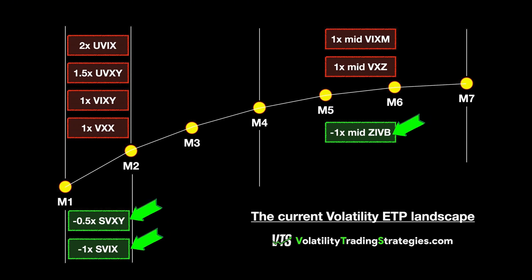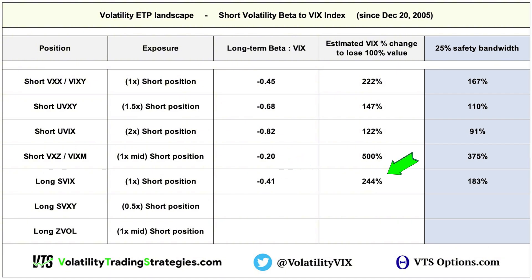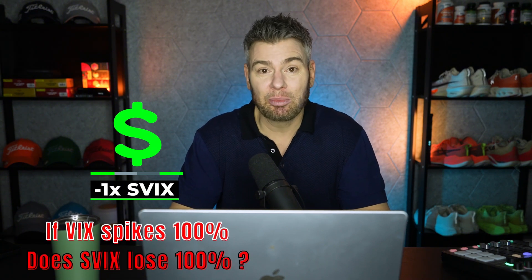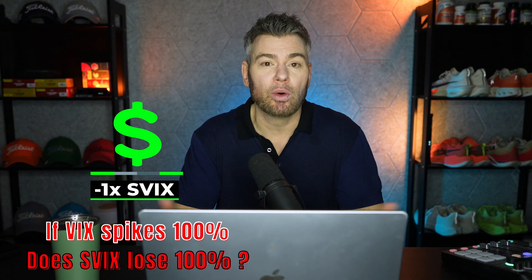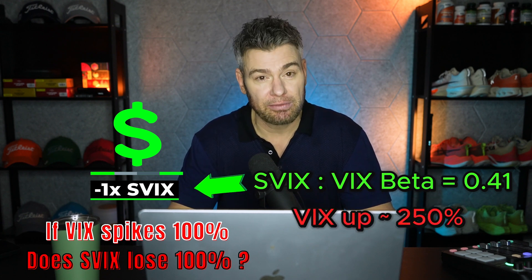Now let's go through the inverse volatility ETPs — these are the ones you can just buy straight up as short volatility positions. Buying the SVIX, which is a minus 1 times inverse product, gives short volatility with a 1 times leverage factor. The SVIX beta to the VIX index is minus 0.41, requiring a 244% VIX spike to terminate SVIX. For everyone wondering if it's a one-to-one relationship: no, a 100% VIX spike does not kill SVIX — it would take about a 250% VIX spike.